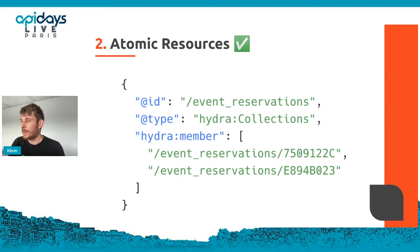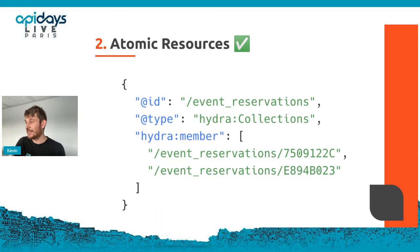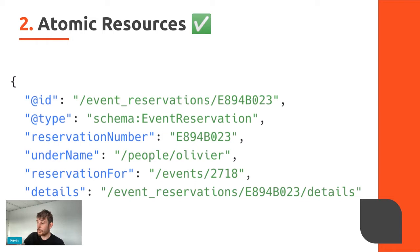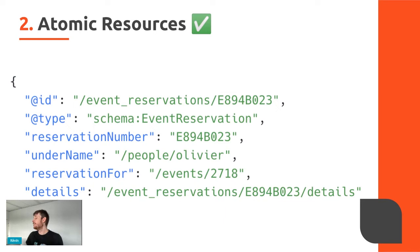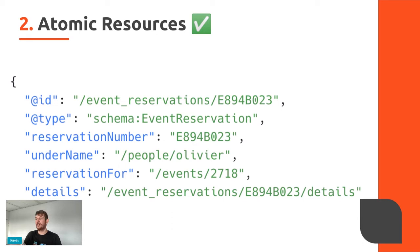Instead of a big document including everything the client needs in a single HTTP response, you use links everywhere. For example, here I have a collection of event reservations using JSON-LD and the Hydra format. Instead of embedding the reservation documents in the collection, I use links — two links to my two reservations in this collection. Within the reservation, I also have links to related data: a link to the person who made the reservation, a link for the related event, and a one-to-one link using a sub-resource to get the details of this reservation.